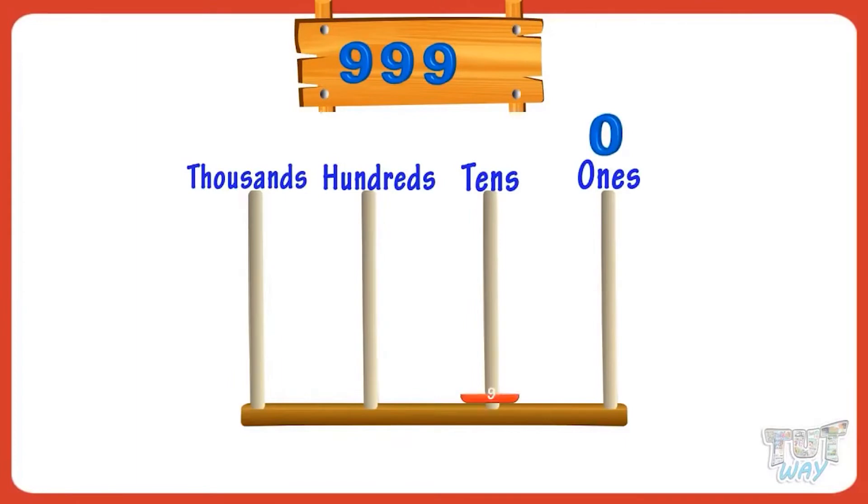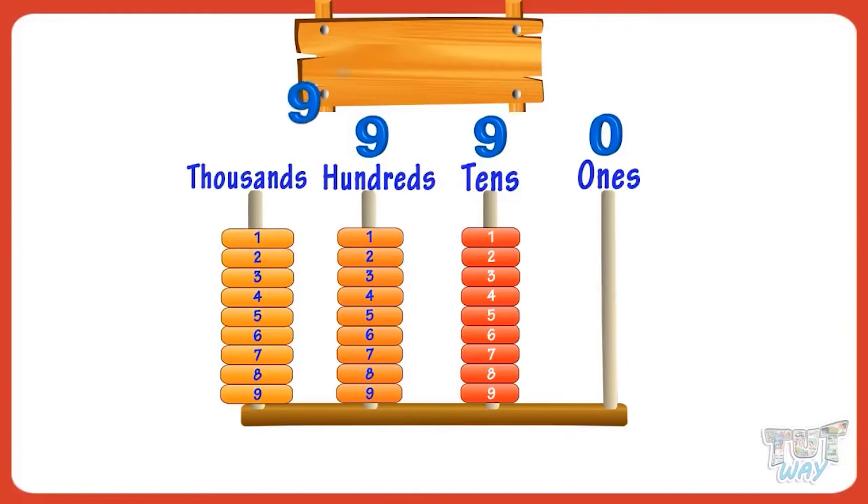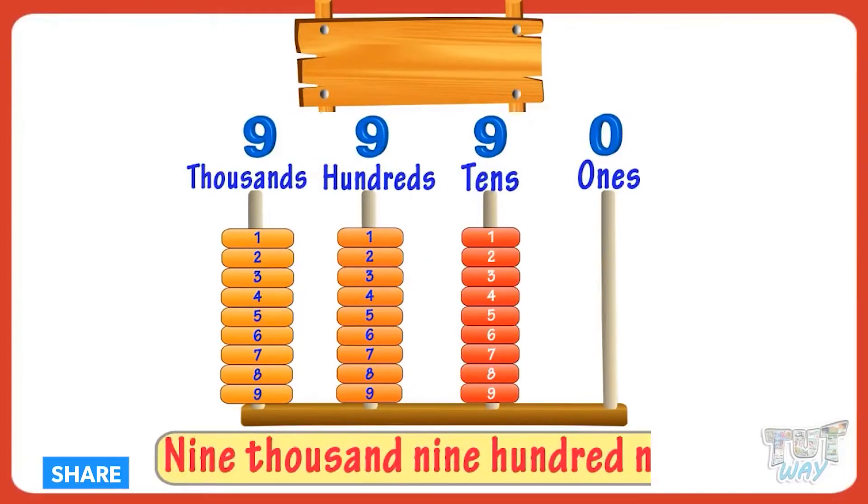Nine tens are there in the number. Now, we can name this number as nine thousand nine hundred and ninety. Good!